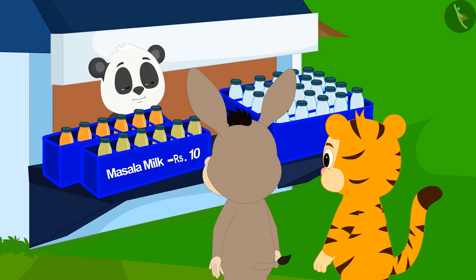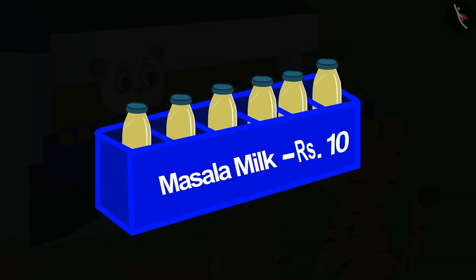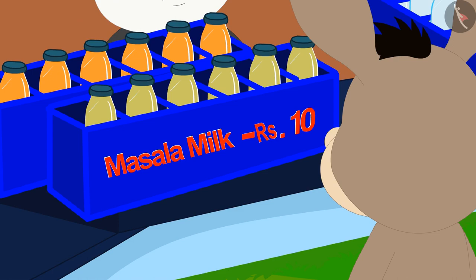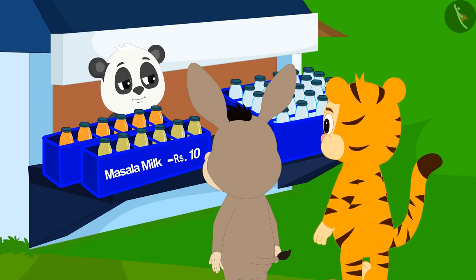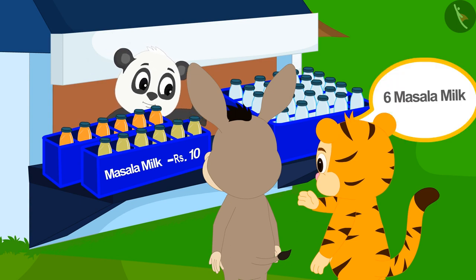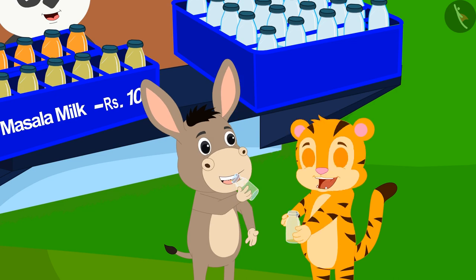They want to drink spiced milk. Golu has placed six bottles of spiced milk on a tray. Shere Khan saw that Golu had written on that tray: Masala Milk – Rupees 10. He got excited and immediately asked Golu for six bottles of spiced milk.